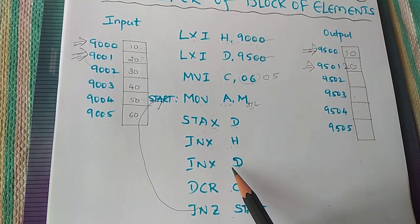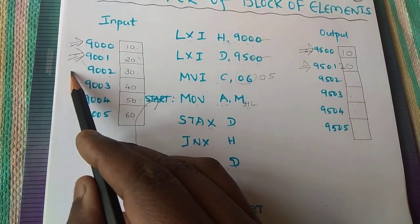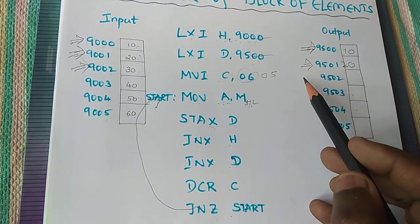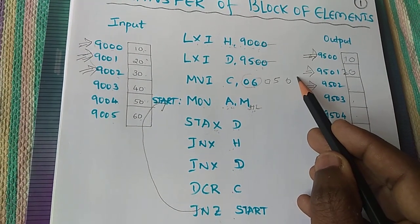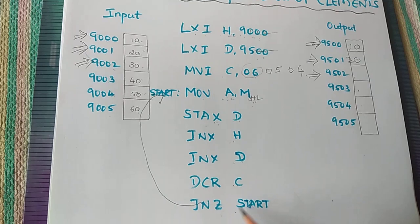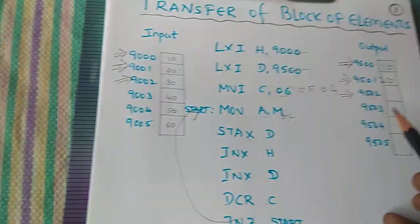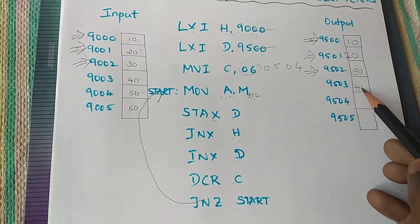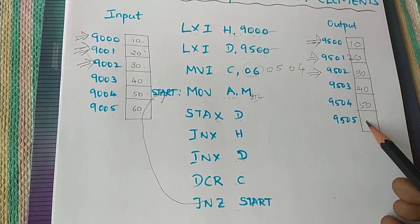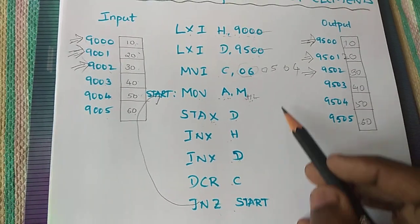STAX D, 9500. Again incrementing HL pair and DE pair, then decrementing C. So this will continue until 30, 40, 50, 60. At last C becomes 0 here.